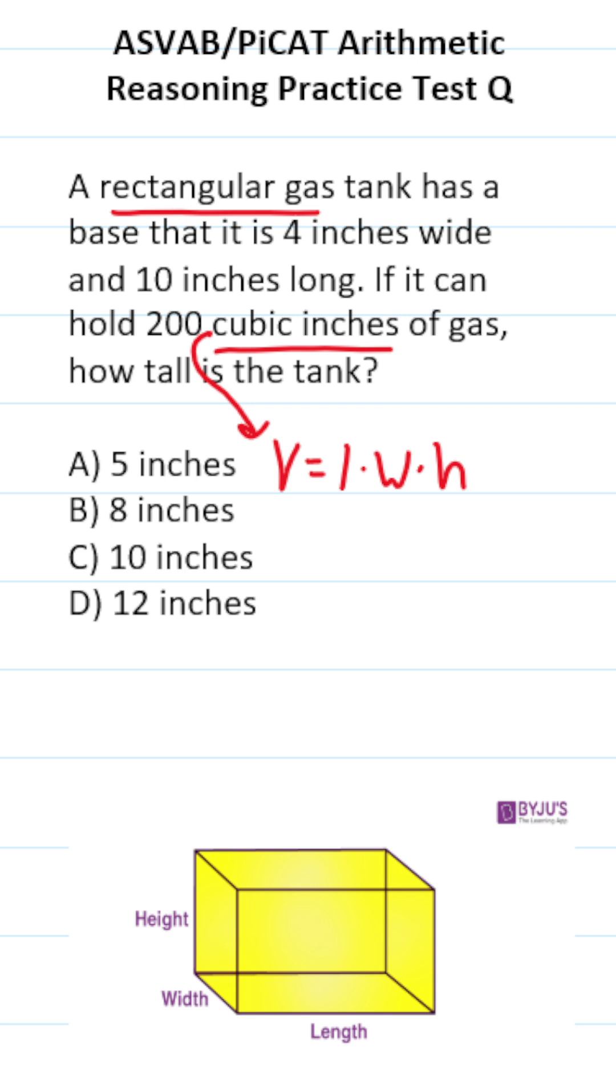According to the problem, its volume is 200 cubic inches, so we'll plug in 200 for V. It has a length of 10 inches and a width of 4 inches, and we're going to be solving how tall it is, so we're going to be solving for H. Let's go ahead and work this out now. This becomes 200 equals 10 times 4 is 40 times H.